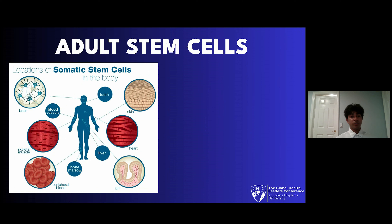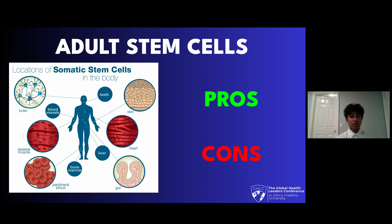One popular source of stem cells for treatment is adult soft tissue such as bone marrow. Some benefits to sourcing stem cells from adults are that they are less likely to be rejected from the body because they come from the patient themselves. Furthermore, they can be sourced in different regions of the body. The downside to using adult stem cells is that the collection procedure is generally very costly and the collected cells are usually oligopotent, meaning they cannot be used for a wide variety of treatments.